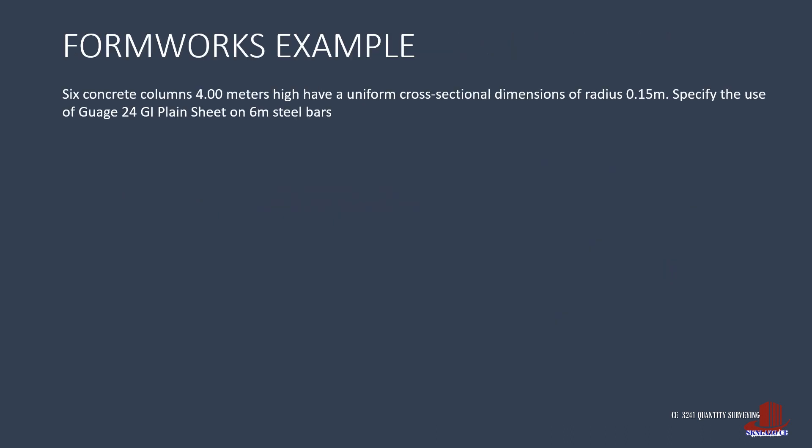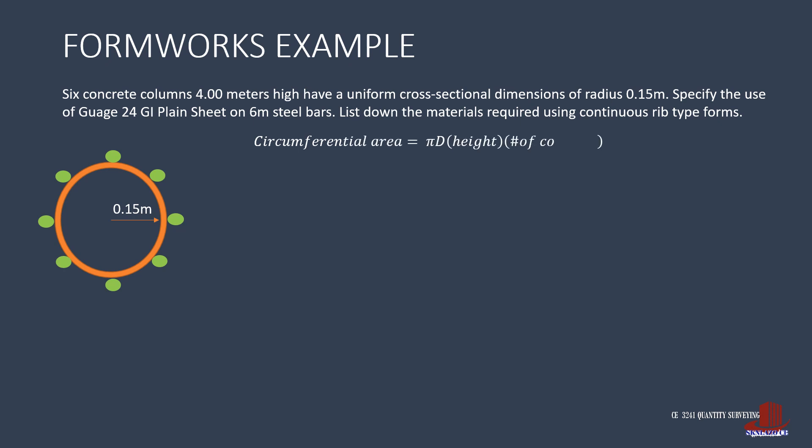Say that with the same example showcased in the rectangular columns, we convert them into 0.3 diameter columns. The new area turns out as π times twice the radius of 0.15 meter multiplied by the height of 4 meters and the 6 columns, giving 7.2π square meters.